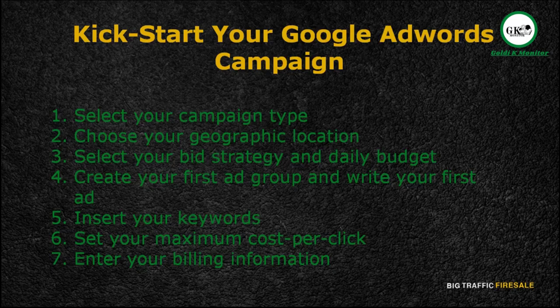Step 1: Select your campaign type and name. Step 2: Choose the geographic location where you want your ads to appear. Step 3: Select your bid strategy and set your daily budget. Step 4: Create your first ad group and write your first ad. Step 5: Insert your keywords into the keyword field in your account. Step 6: Set your maximum cost per click. Step 7: Enter your billing information.